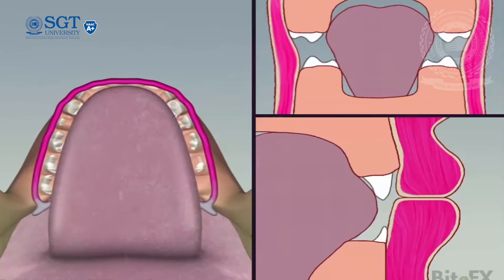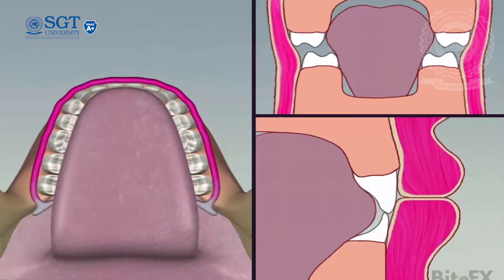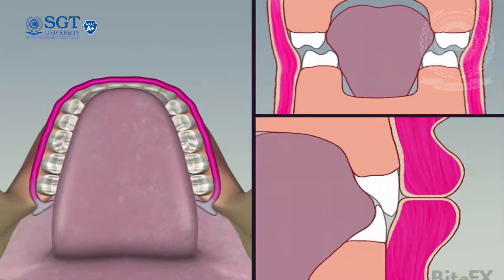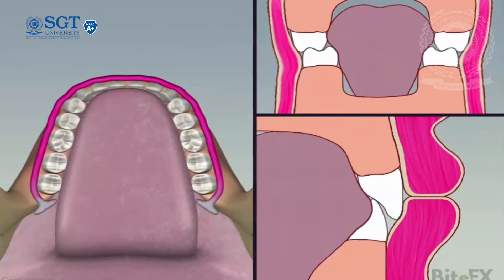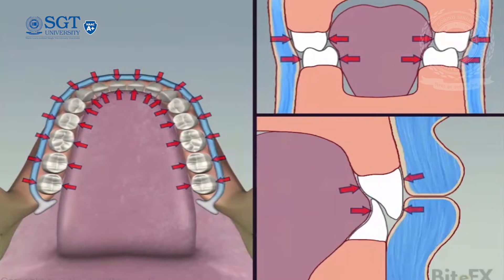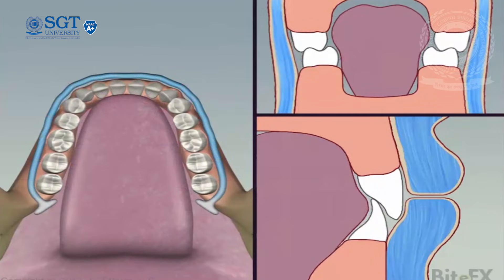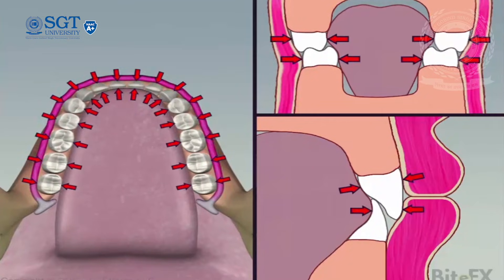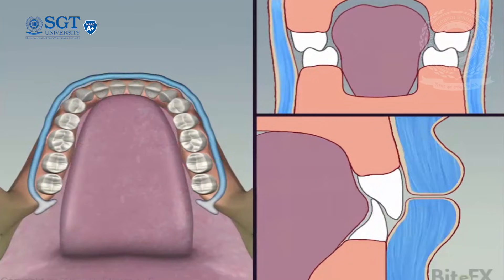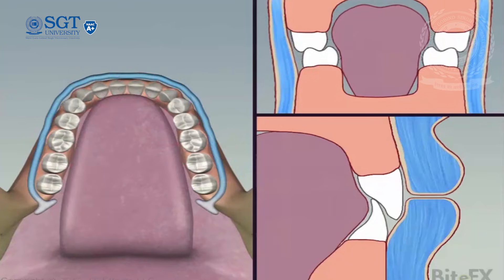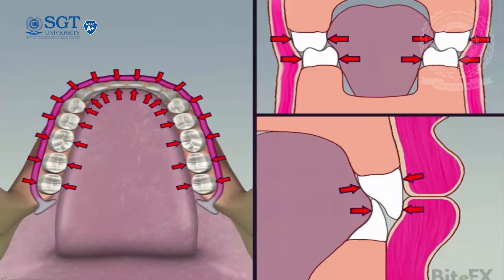The neutral zone is an area where the forces of the tongue are balanced by the forces of the cheek musculature. If the teeth are arranged in the neutral zone, they will resist the displacing forces much better than if the teeth are arranged buccally or lingually.